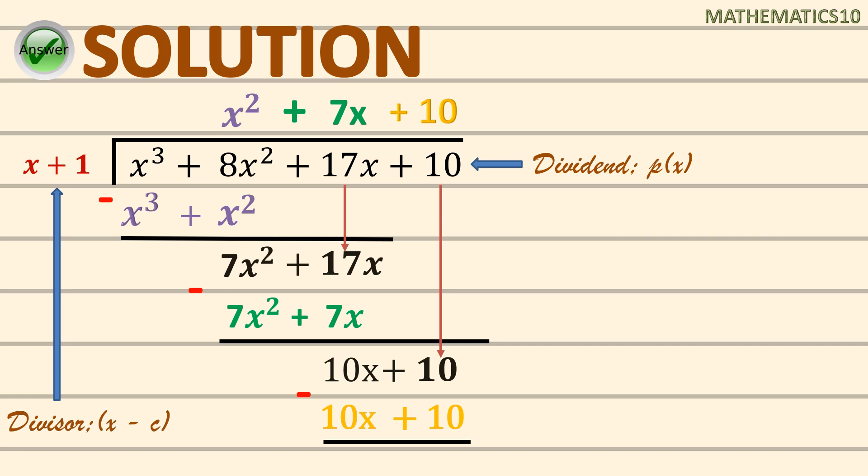Since we have no other terms to bring down, this is the end of our solution. Our remainder is 0, which means we can conclude that x² + 7x + 10 is our quotient.